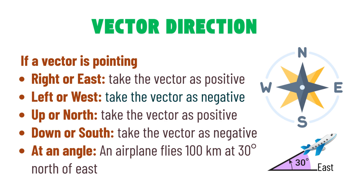Sometimes the direction isn't straight up, down, left, or right — it could be at an angle. For example, an airplane might fly 100 kilometers at 30 degrees north of east. In that case, we break it into parts using those same sign rules.